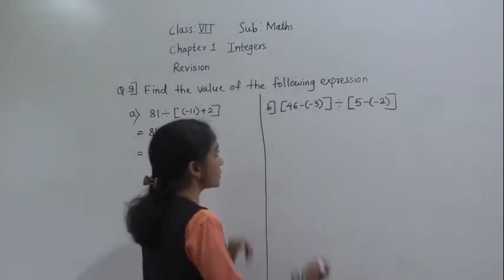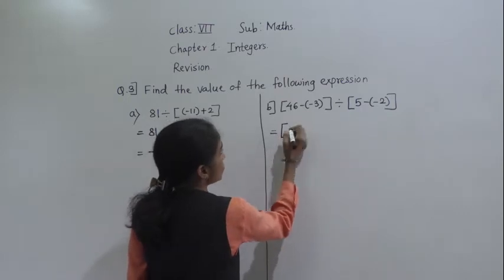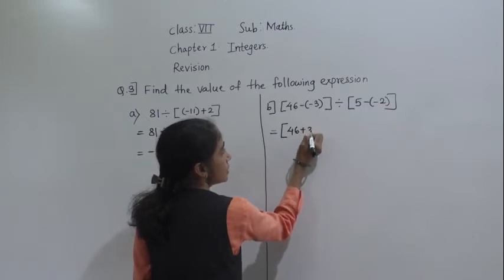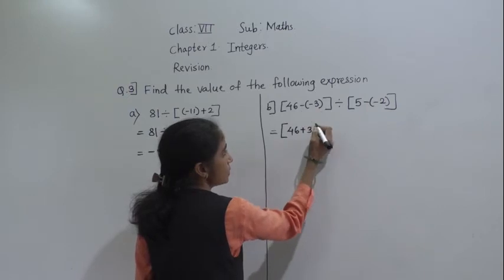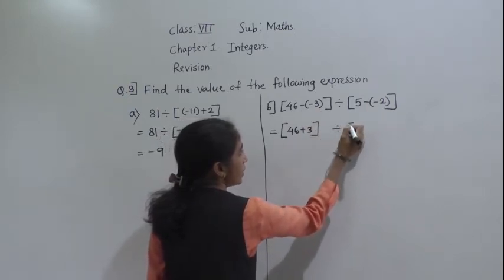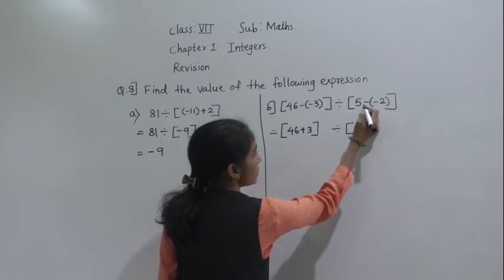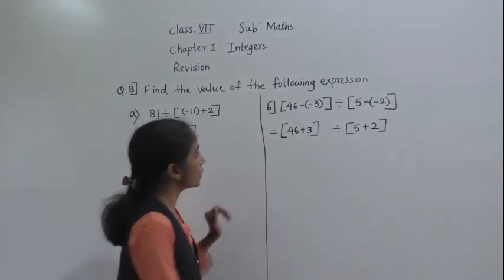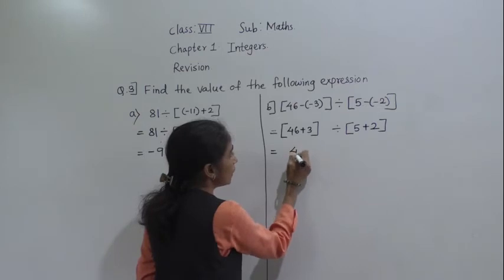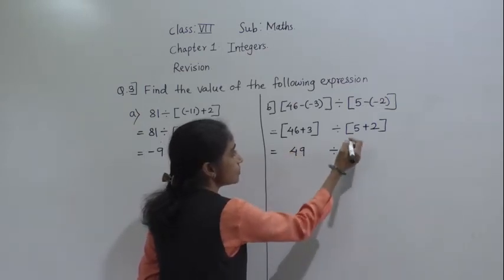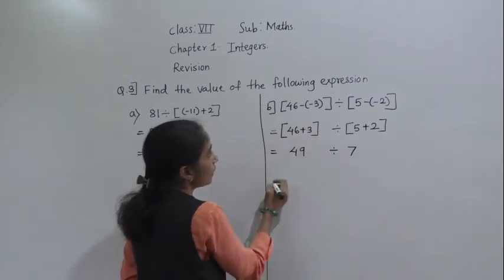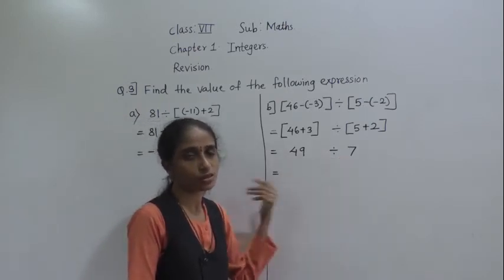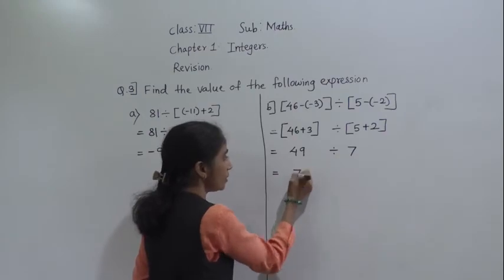Let's see the next example. First we will solve this bracket: 46 — minus minus plus plus 3. Open the bracket: minus minus plus. Then divided by sign as it is, here also 5 as it is minus minus plus — so plus 2. Now let's solve: 46 plus 3 is 49. Divided sign as it is, 5 plus 2 is 7. Now 49 divided by 7 — both the numbers are positive, so their quotient will be positive. 7 sevens are 49.